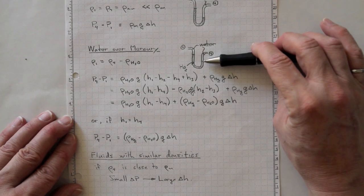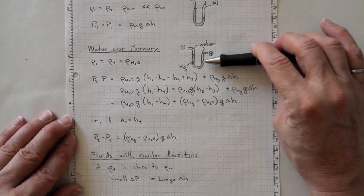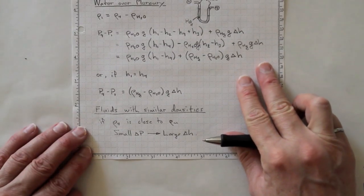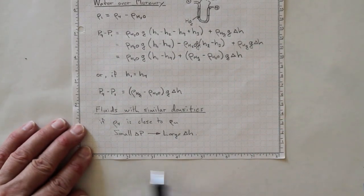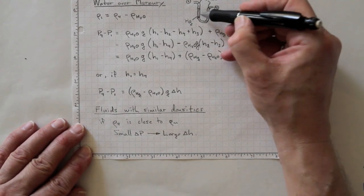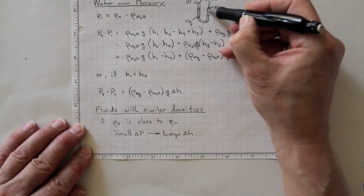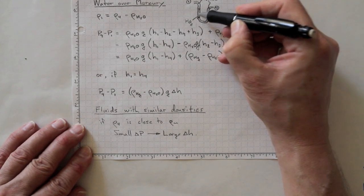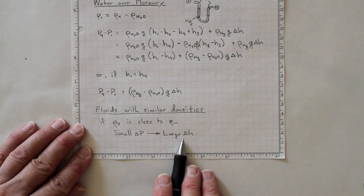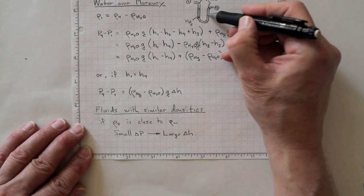We can use this to advantage in a mercury manometer to measure relatively large pressures, or if we make our manometer fluids very close in density so that this fluid is very close to the density of this fluid, then we can magnify small pressure differences into large delta H ranges.